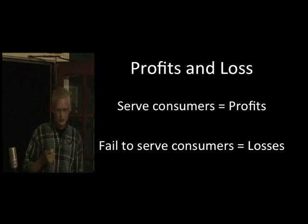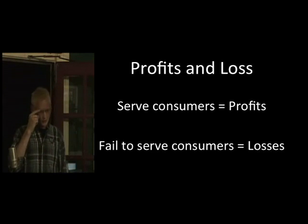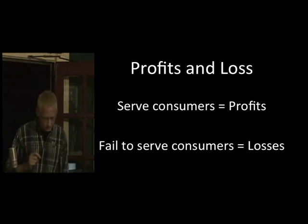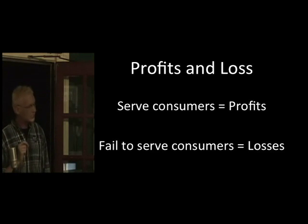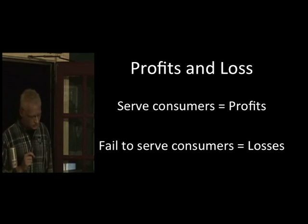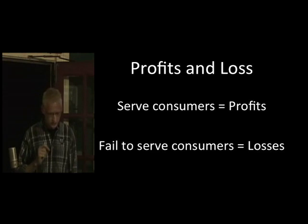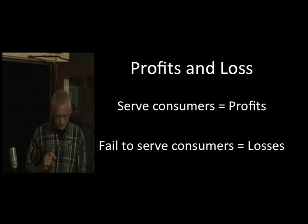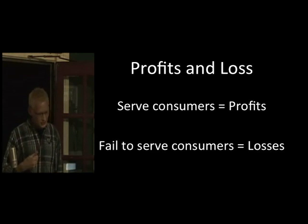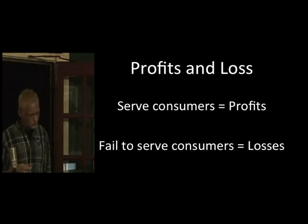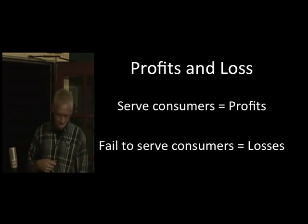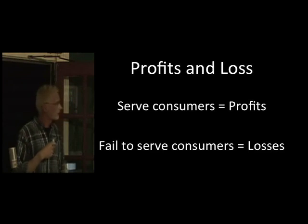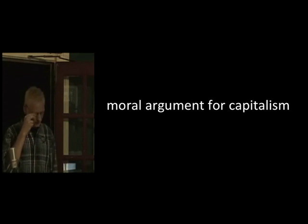These capitalist processes have propelled us from subsistence to the greatest standard of living the world has ever known. They have been so successful that the critiques of capitalism have largely changed over the last 100 years from not providing enough to providing too much — too much abundance, too much wealth, too many goods. If our desire is to provide for the poor, too much at too low costs sounds a lot better than too little at too high costs.